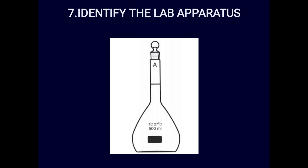Spotter seven: identify the lab apparatus. This is a flask, but pear-shaped with a flat bottom, a glass cork or stopper, and a volume marking — 500 ml, sometimes 100 ml or 50 ml. The answer is standard flask. It is accurate; up to the mark in the neck it measures 500 ml.